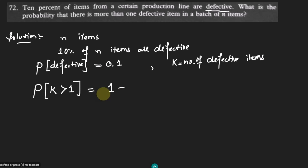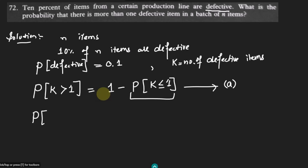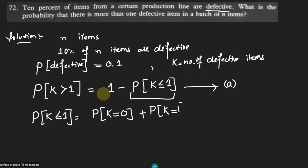So I want to find out P(k > 1), which can also be found using 1 minus the probability that the number of defective items is less than or equal to 1. This is the same complement formula we have previously seen — call it equation A. I have to find P(k ≤ 1), which equals P(k = 0) plus P(k = 1). We find this using the binomial probability law.